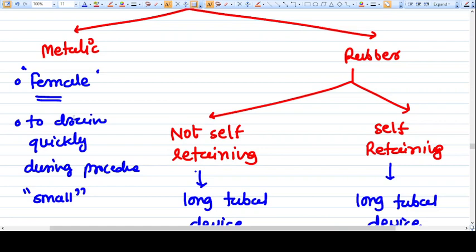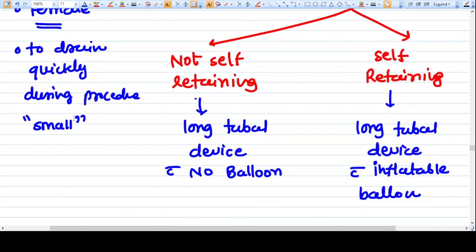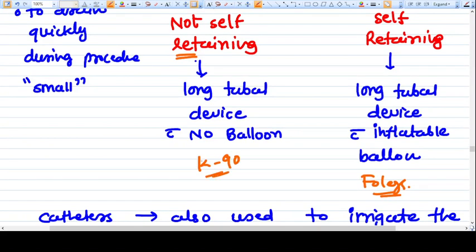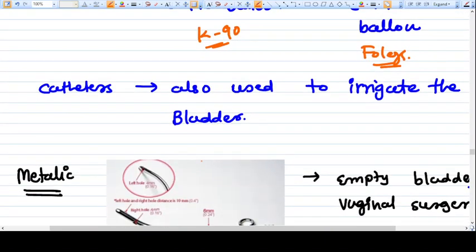Metallic catheters are not used very commonly nowadays except in surgeries. Rubber catheters are used most commonly. There are two types: non-self retaining, which is a long tubular device with no balloon, and self-retaining, where there's a long tubular device with an inflatable balloon. Foley catheters are self-retaining type, and K19 or simple rubber catheters are non-self retaining. Catheters are also used to irrigate the bladder or supply antibiotics through the catheter into the bladder.